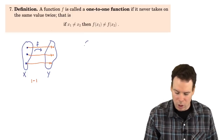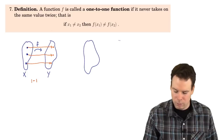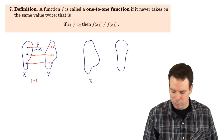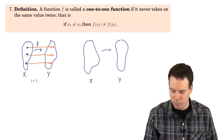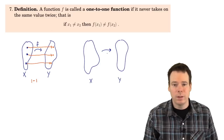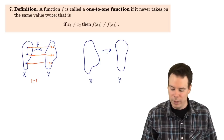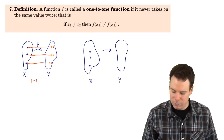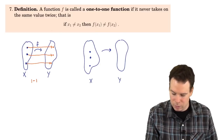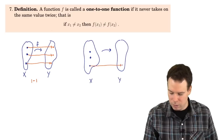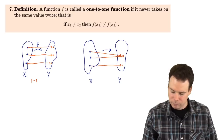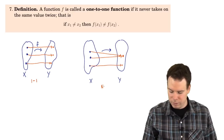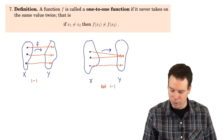What would a function that's not one-to-one look like? Well, it would have to have the property that it took the same value twice. So there would have to be a couple of different inputs — maybe this one goes over here — but there would have to be a couple of different inputs which ended up going to the same place. So this would be an example of a function that's not one-to-one.